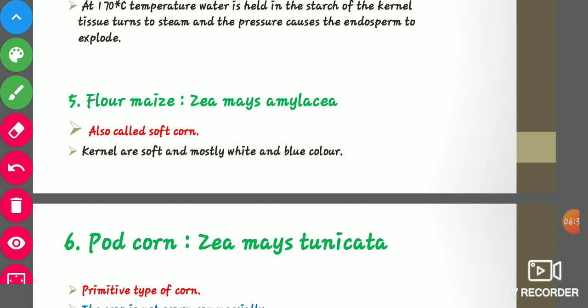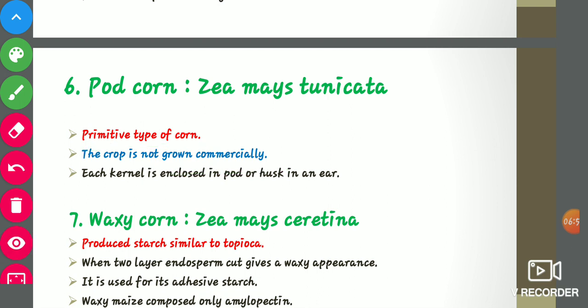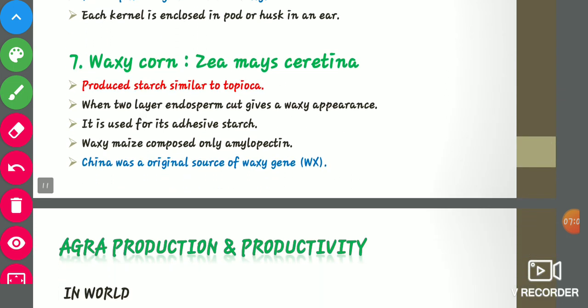Pod corn (Zea mays tunicata) is a primitive or the oldest type of corn, no longer grown commercially. Each kernel is enclosed in a pork or husk within an ear. Waxy corn (Zea mays ceratina) produces starch similar to tapioca — it has the highest starch content among all seven types. When the two-layer endosperm is cut, it gives a waxy appearance. It is used for its adhesive starch and is composed of 100 percent amylopectin. China was the original source of waxy corn.